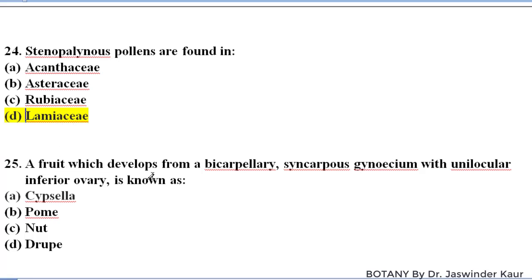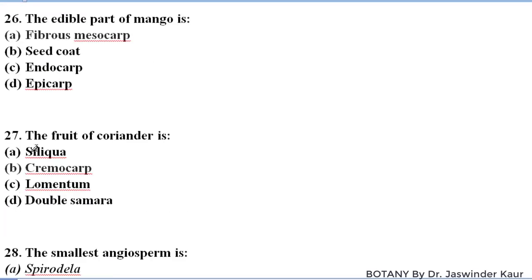A fruit which develops from a bicarpellary syncarpous gynoecium with unilocular inferior ovary — the fruit that develops from a bicarpellary syncarpous fused gynoecium with a single-locular inferior ovary is known as a cypsela fruit, and this fruit is present in family Asteraceae.